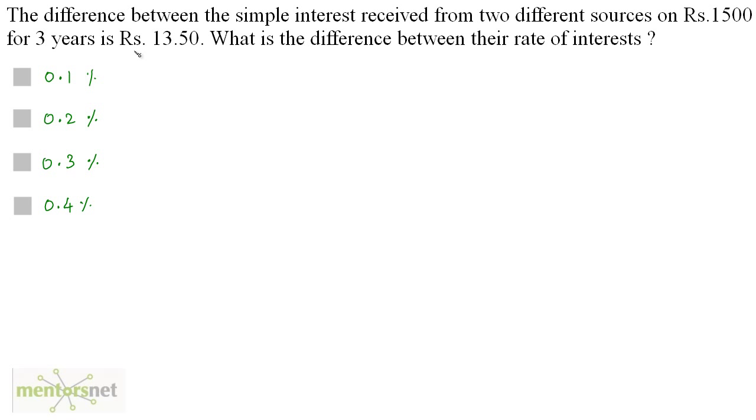So the difference between the simple interest is Rs.13.5. So I can write SI1 minus SI2 is equal to 13.5. And in both the cases the principal amount and the number of years are same. So only the rates are different and that's what we have to find, the difference between their rates.